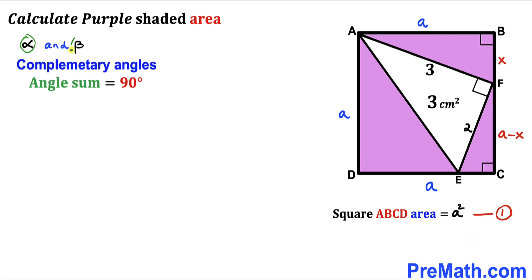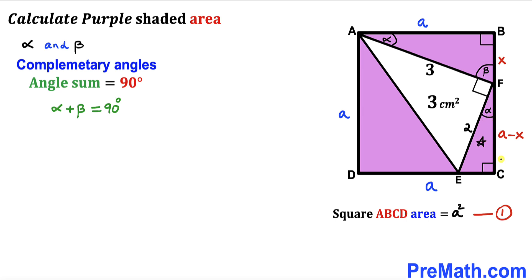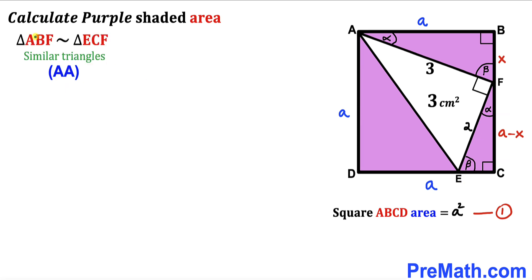Let's assume alpha and beta are two complementary angles, so alpha plus beta equals 90 degrees. In triangle ABF, one angle is 90 degrees since we're dealing with a square. If we call the angle at A alpha, then the angle at B must be beta. Moving to triangle ECF, one angle is 90 degrees and another is alpha, so the third angle is beta. Therefore triangles ABF and ECF are similar triangles by the angle-angle similarity theorem.